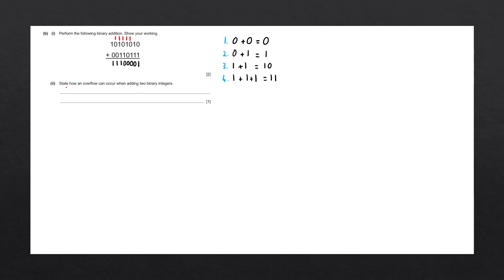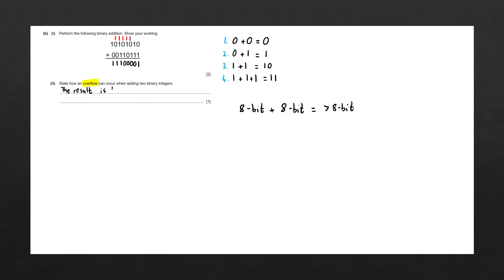The second part of the question says: state how an overflow can occur when adding two binary integers. Overflow occurs when we add two binary integers that have the same number of bits — for example, adding an 8-bit number to another 8-bit number — and the result equals a binary number that is greater than 8 bits. With different numbers, we could get an extra bit to result in a 9-bit number. When that is the case, we call this overflow. The answer is: when the result is larger than can be stored in the given number of bits.